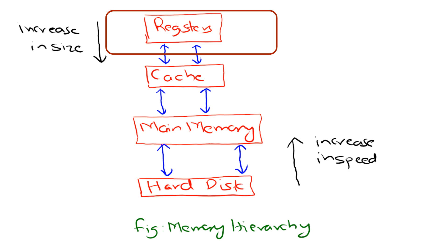At the very top we have registers. These are like the chef's hands — the fastest and most expensive memory, directly inside the CPU. They hold the data and instructions that the CPU is currently working on. But because they are super fast and part of the CPU, they are very, very limited in size.